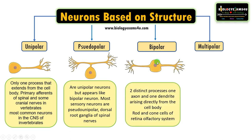The next type is the bipolar neuron. As the name indicates, it has two processes or two extensions that extend out from the cell body — one axon and one dendrite extending from the soma. They are responsible for transmitting sensory information from the periphery to the CNS. Rods and cones of the retina and the olfactory system all have bipolar neurons. An example is the retinal bipolar cell, which receives signals from photoreceptors sensitive to light and transmits them to ganglion cells that carry the signal to the brain.